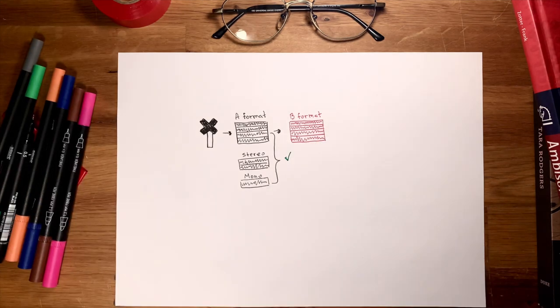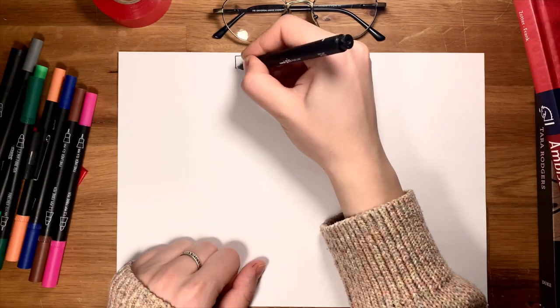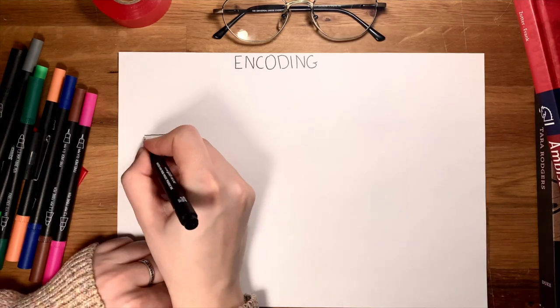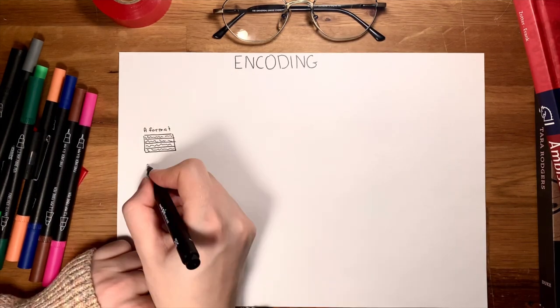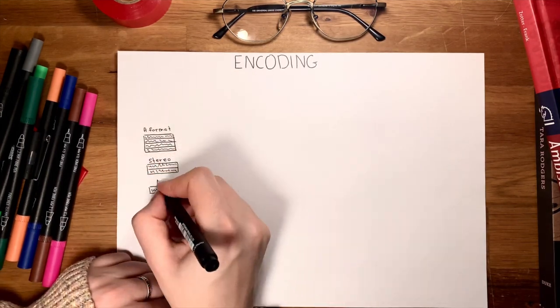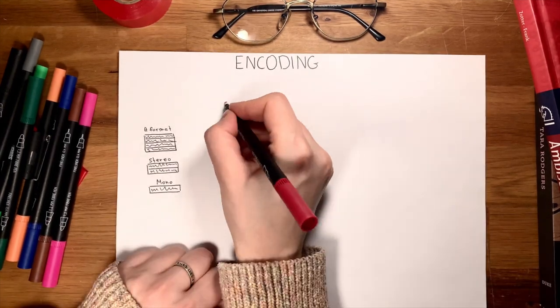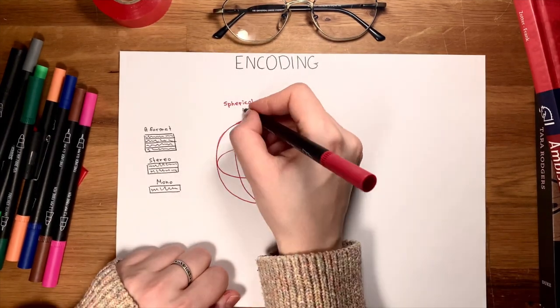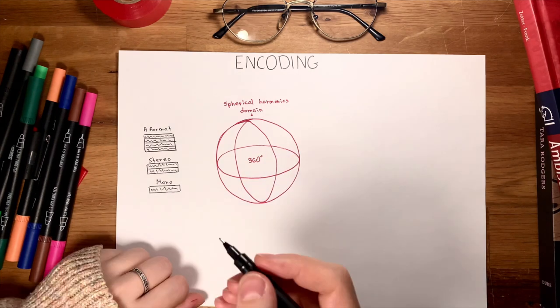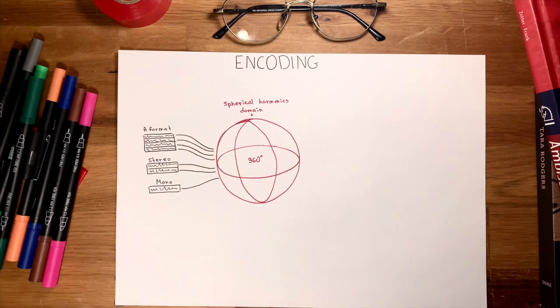Remember that working with ambisonics doesn't require A-format recordings — mono and stereo files can be used as well. Encoding is when all A-format, mono, or stereo files are placed into three-dimensional space, or the spherical harmonics domain. The spatial resolution of a sound source is dependent on the number of spherical harmonics components which the three-dimensional sound field is decomposed into. Spherical harmonics can be imagined as virtual figure-of-eight microphones pointed in different directions in space.